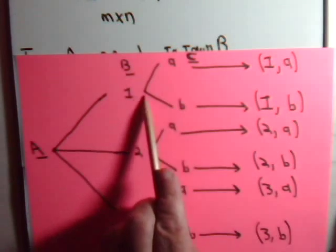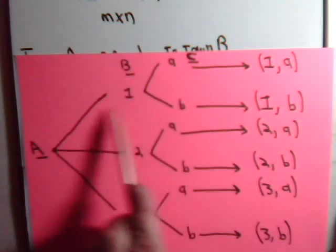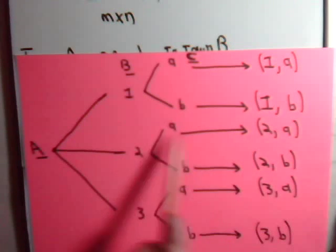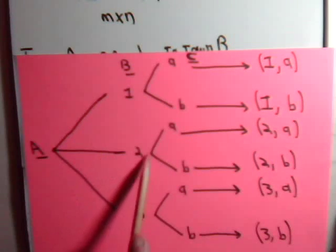It could be 1A or 1B, or it could be 2A or 2B, or it could be 3A or 3B. So this would be the sample space here for a simple kind of problem.